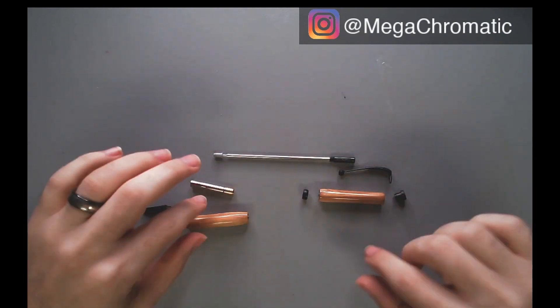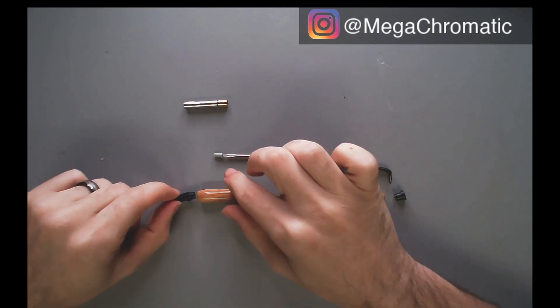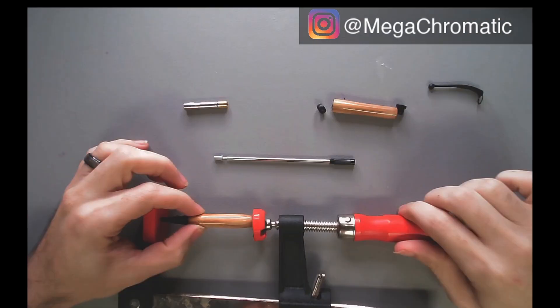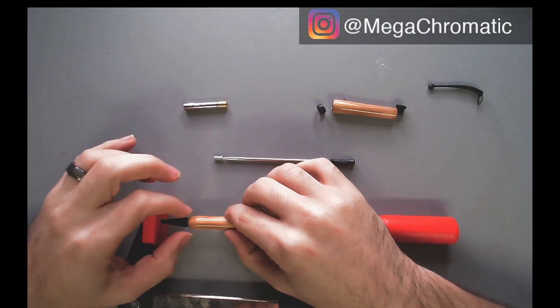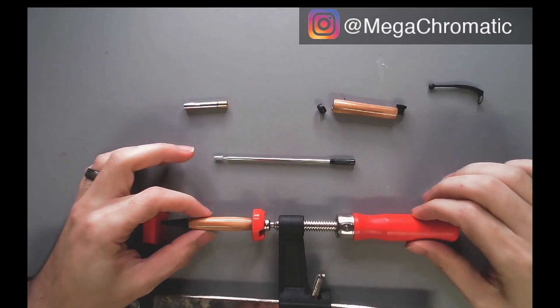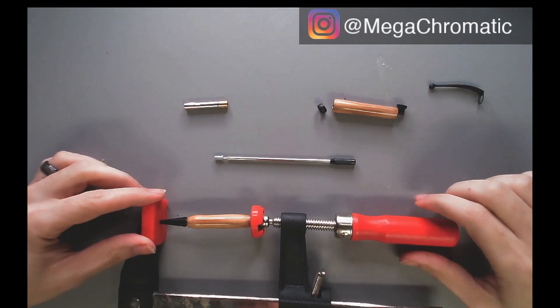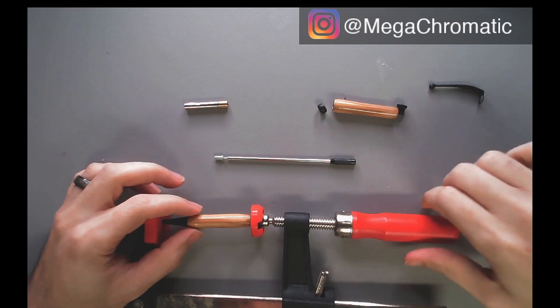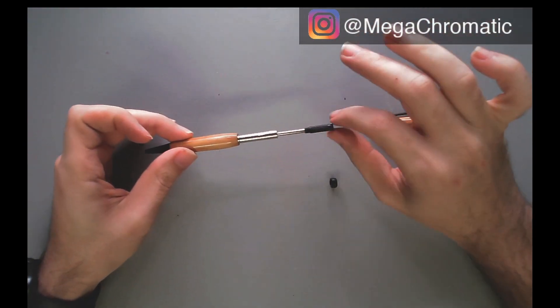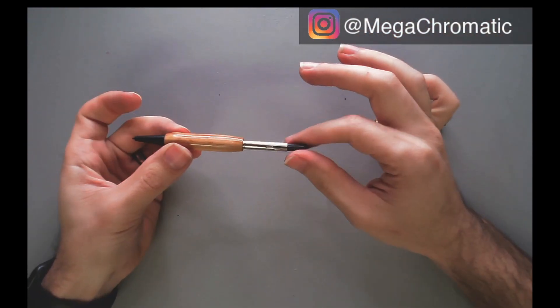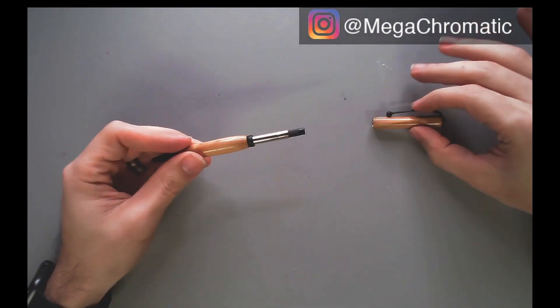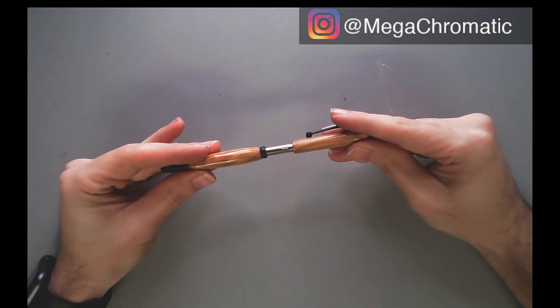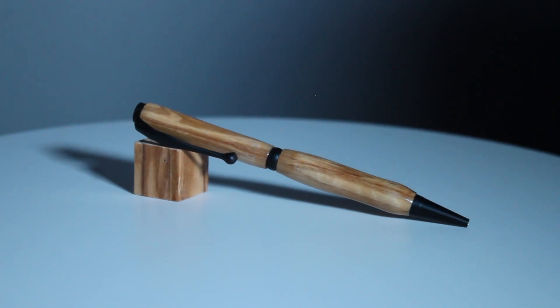Now we have the pen parts right here and it's time to put the pen pieces together. I made sure that I started with the tip. I had a little bit of a hard time getting the tip in there, so I used the clamp to put some pressure for the tip to go in. After that, we put in what is called the transmission, which is the turning part of the pen. We put the rest of the pieces together and we have a finished pen.